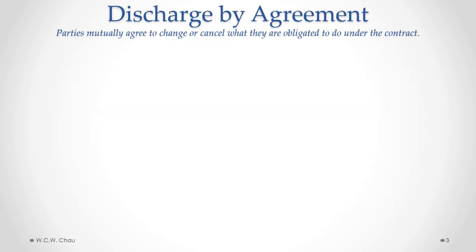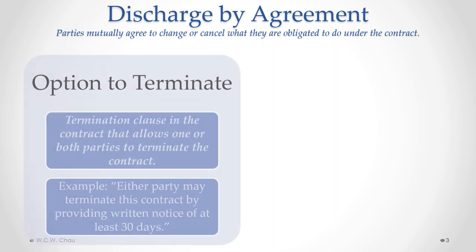Contractual obligations can be discharged by agreement where the parties involved have mutually agreed to either change or cancel what they are obligated to do under the contract. This can be done in a number of specific different ways.